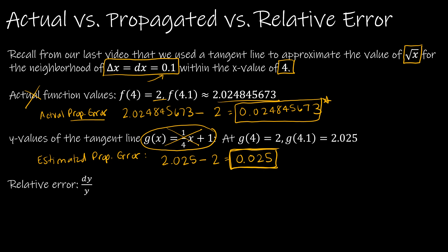Now let's talk about how to find relative error. The relative error is dy over y, where dy is the differential of y. In our example we were using radical x, so dy — the original function was x to the 1/2 — so dy was 1/2 times x to the negative 1/2 dx. We simplified that to 1 over 2 radical x times dx.